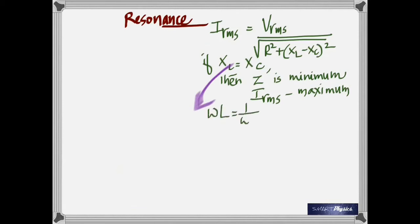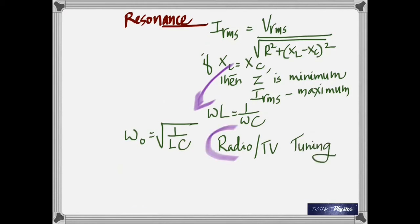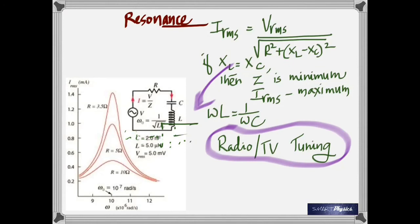You get omega times the inductance equals 1/(omega C). Rearrange that to get the resonant angular frequency as omega equals square root of 1/(LC). This is what is used in radio and television tuning. How would the graph look like?